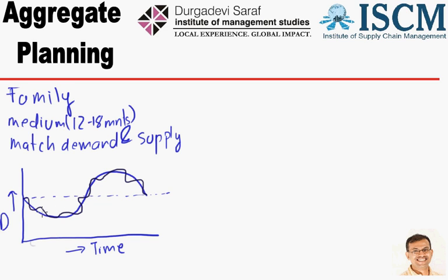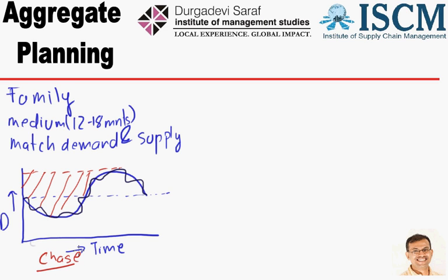The beauty of this approach is that there is hardly ever any inventory buildup. But the major problem is that throughout the year the manufacturer will have to live with high capacity — the maximum capacity equal to peak demand — so in periods of low demand, capacity will be underutilized. This method is called the chase method of production planning: it creates low capacity utilization but also very low inventory.